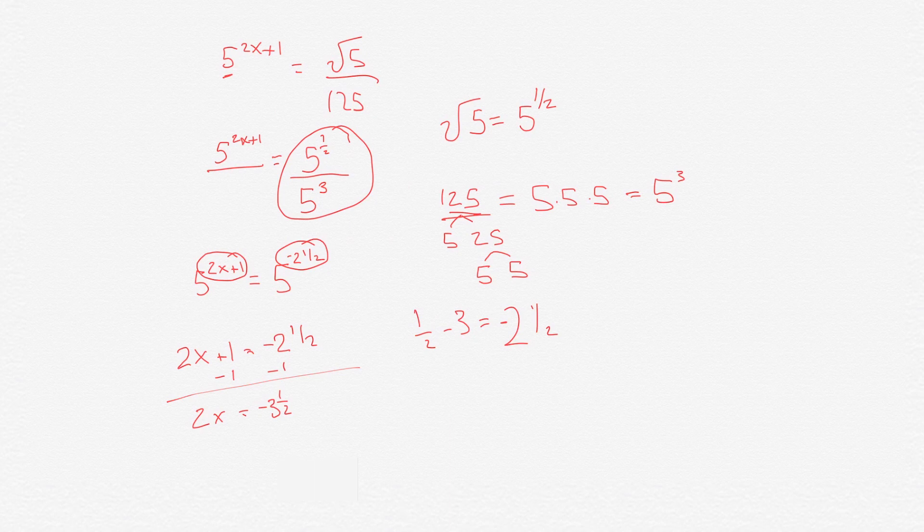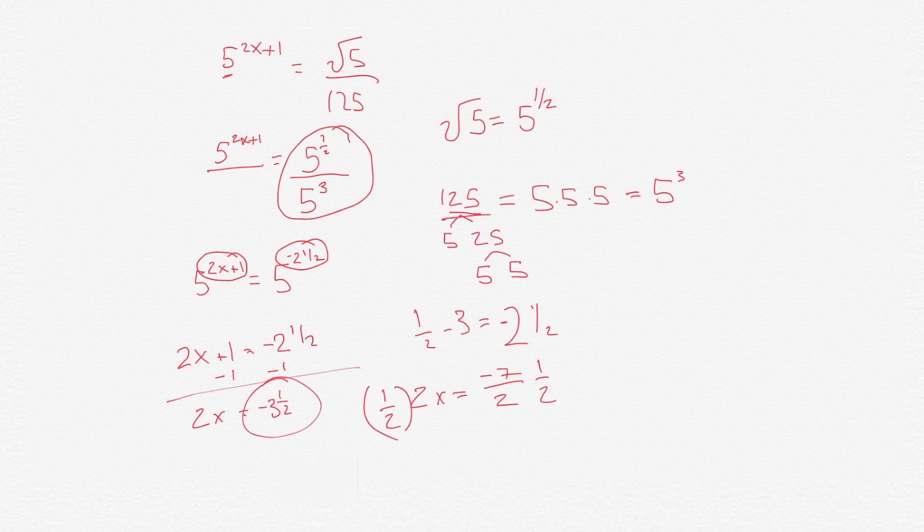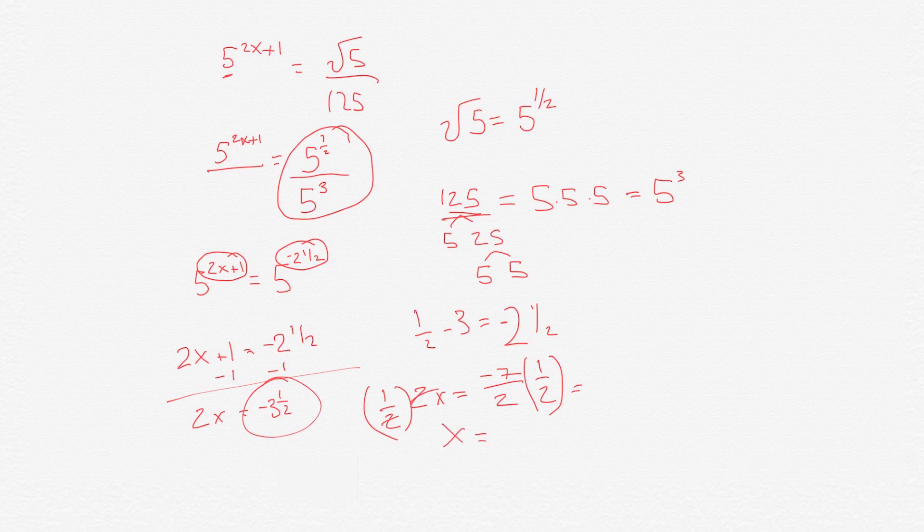Let's simplify that. Negative 3 and a half is just like negative 7 halves. And then we multiply 1 half to each side. That way we get rid of the 2, so then we get x equals negative 7 times 1 is negative 7, and 2 times 2 is 4.